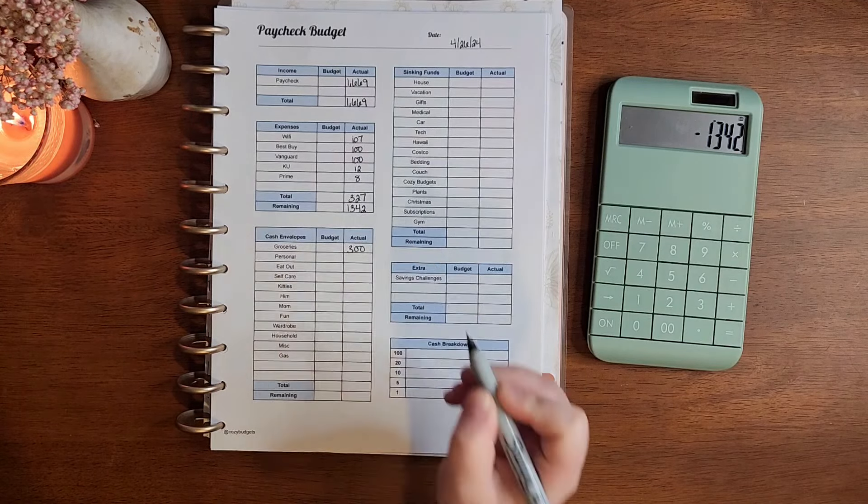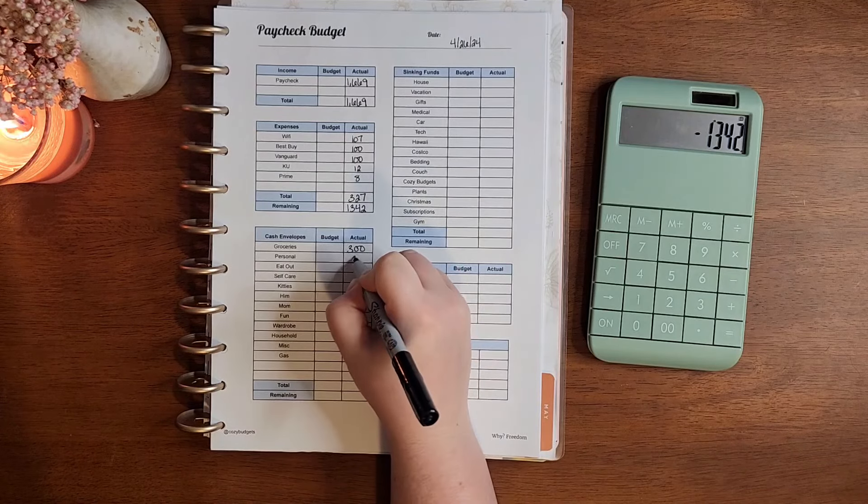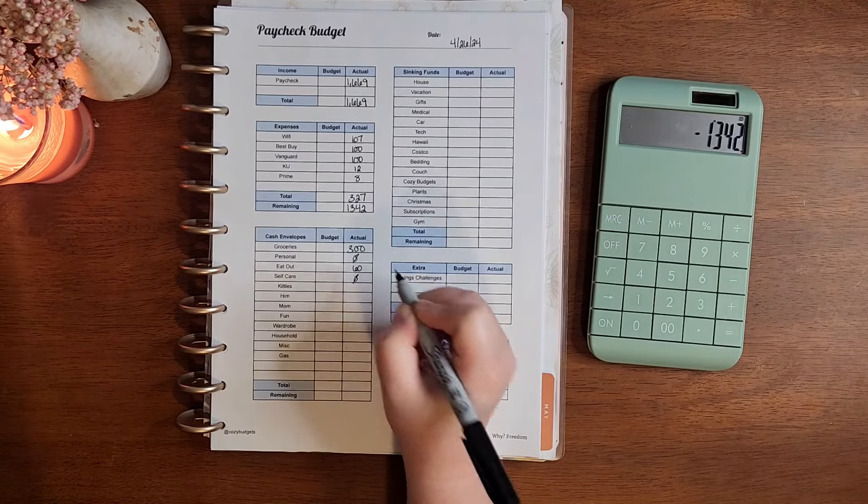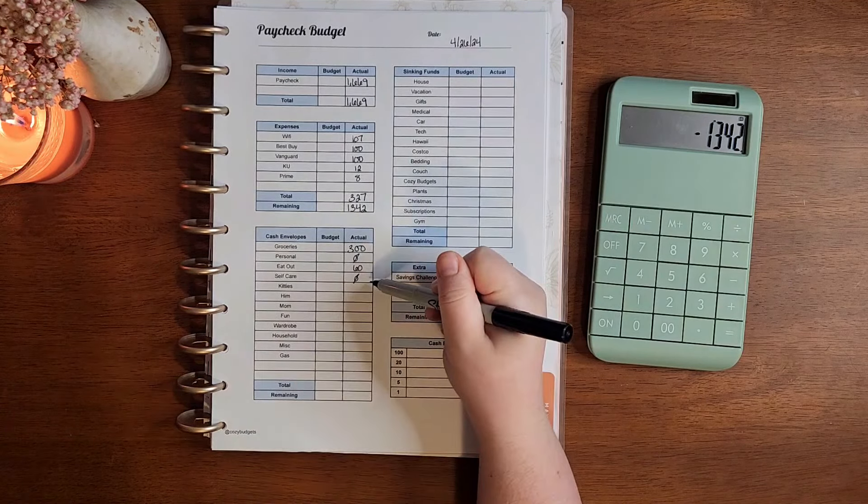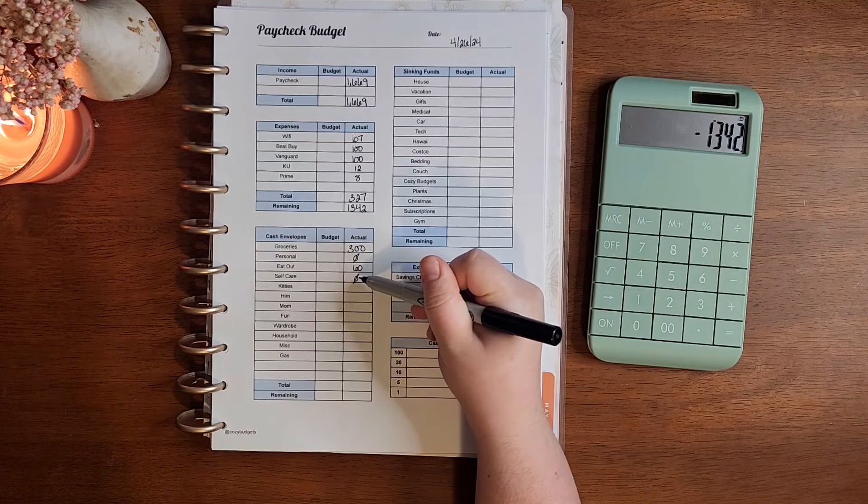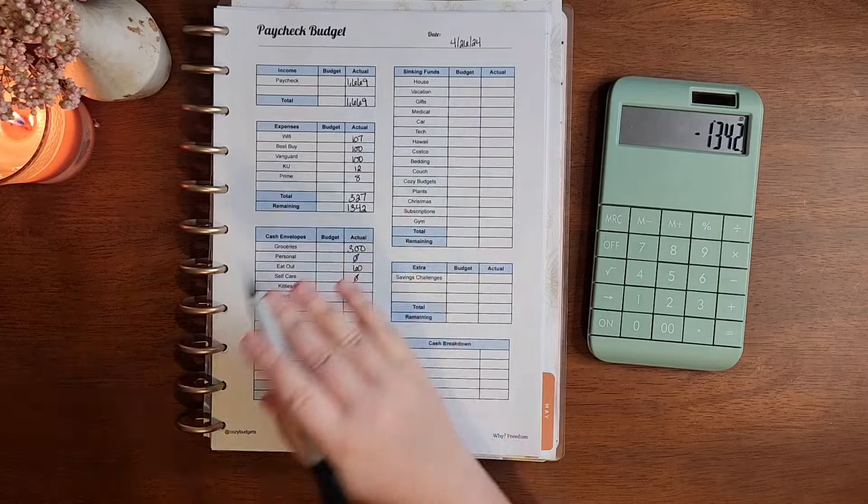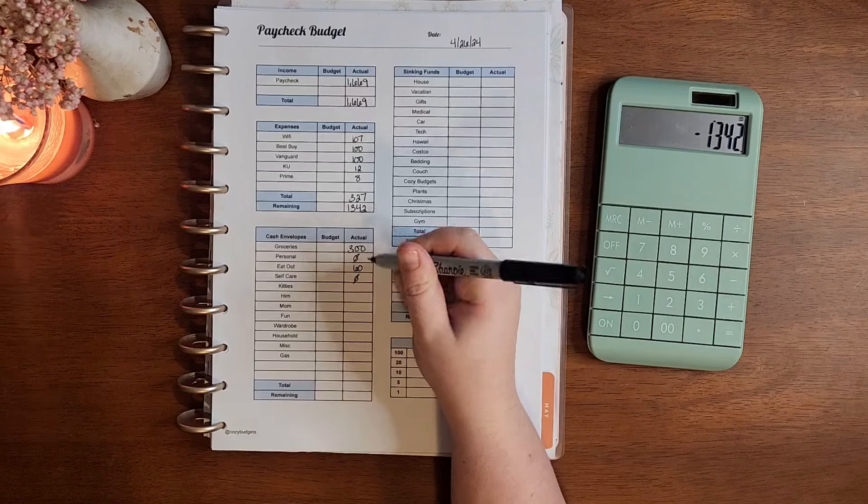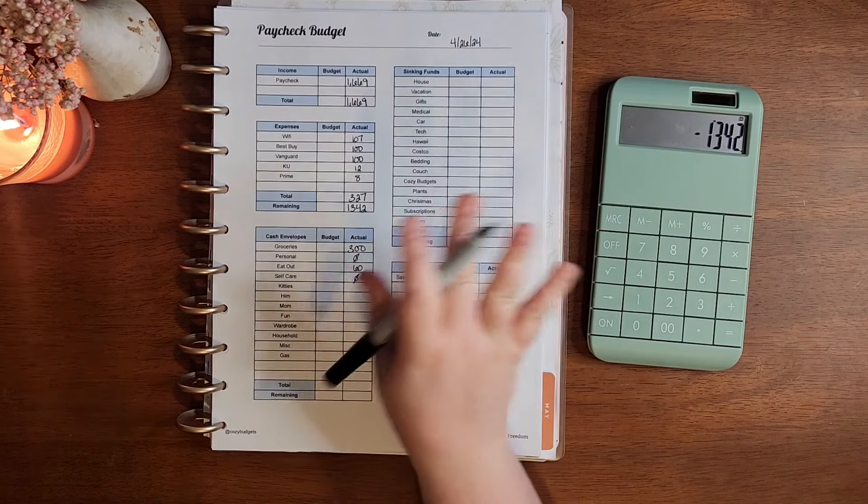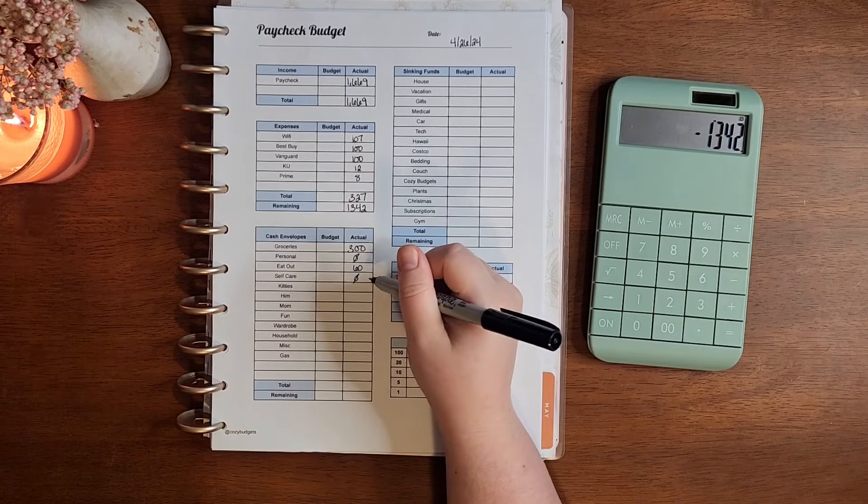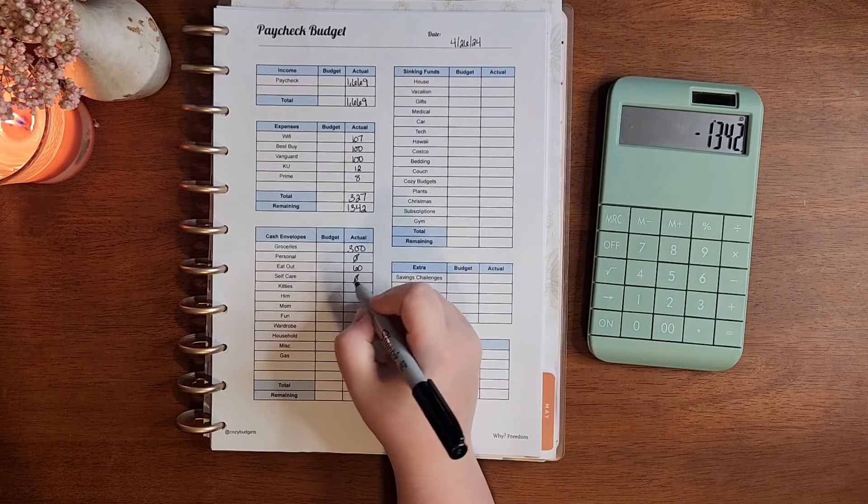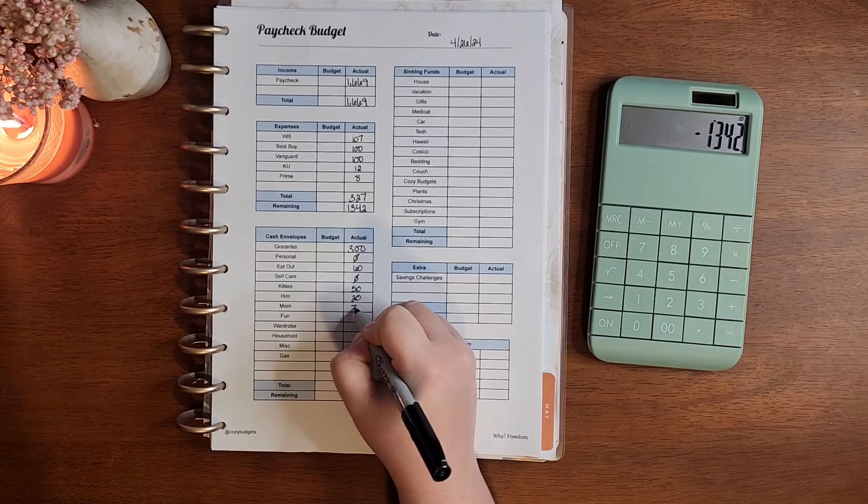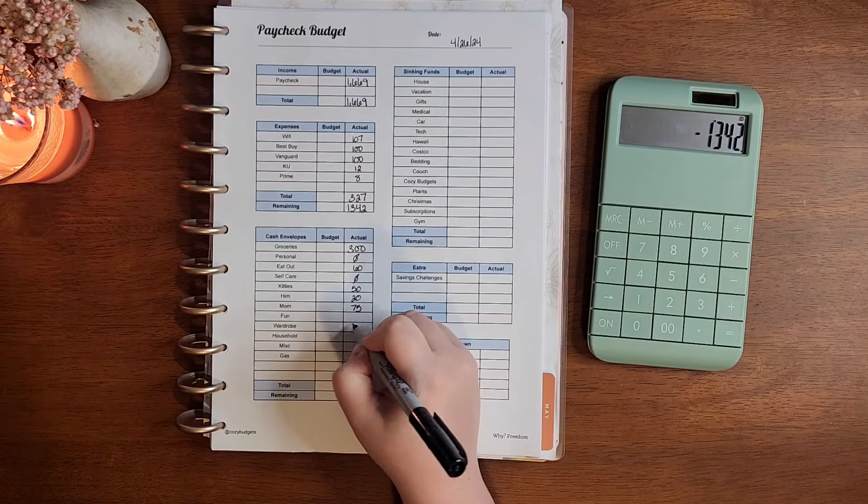Groceries is getting its normal $300. Personal is getting nothing this time. Eat Out is getting $60. Self-care is getting nothing this time. I have already in the self-care envelope my next massage that's funded already. And then I think I have like $20, $25 or so on top of that. So I'm not going to worry about stuffing it this time. Kitties is going to get $50. Him is going to get $20. Mom is going to get $75. Fun is going to get $50.